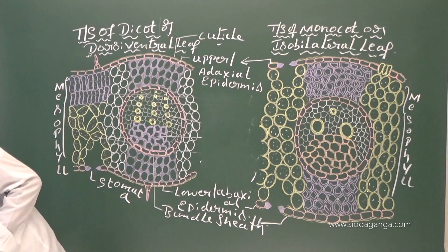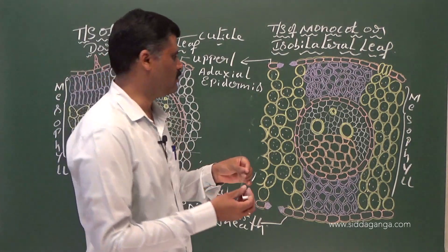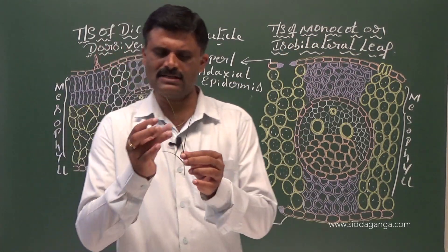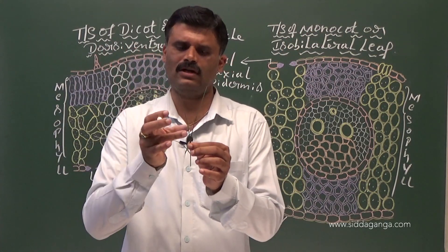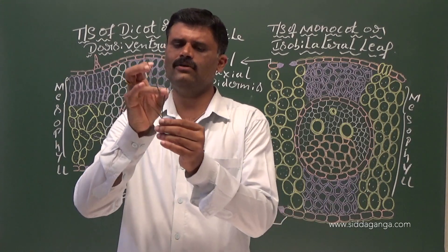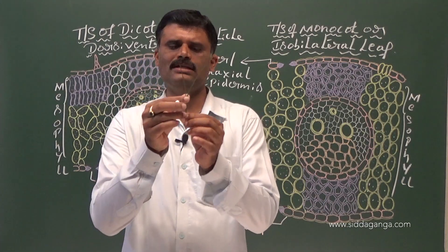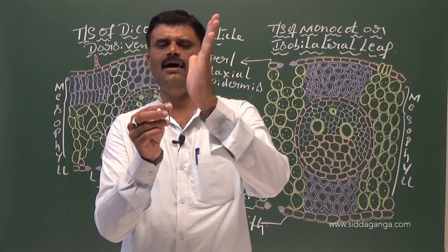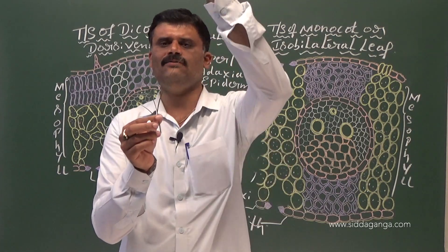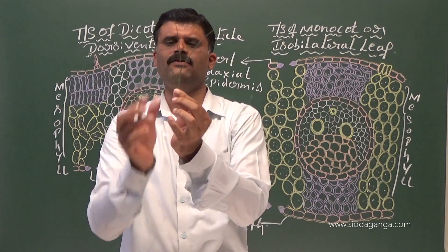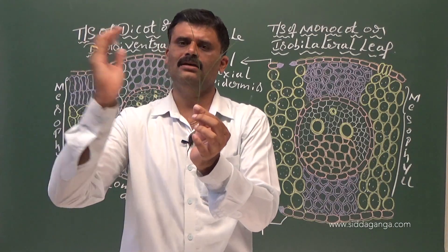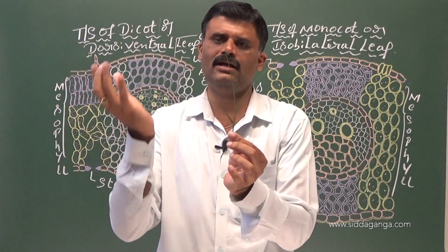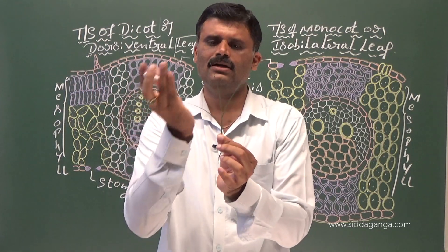The monocot leaf is exemplified by maize leaf, also called a grass leaf. This grass leaf is located in the nodal region and is oriented vertically — it stands straight. Both the upper and lower surfaces receive sunlight.